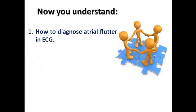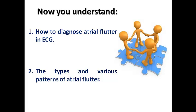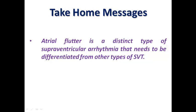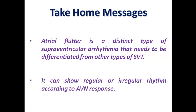In summary, we have learned how to diagnose atrial flutter on ECG, the triphasic components of flutter waves differentiating it from atrial tachycardia, the difference between typical and atypical atrial flutter, clockwise versus counterclockwise patterns, and the various AV conduction ratios of 2:1, 1:1, 3:1, and variable. The take-home message is that atrial flutter is a distinct type of SVT that must be differentiated from other SVTs, and it may be regular or irregular according to AV nodal response.